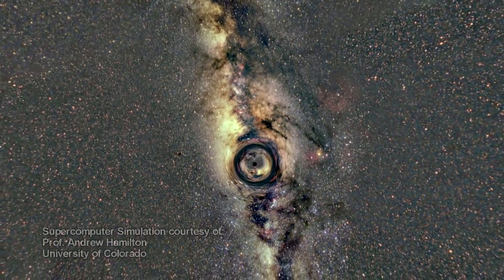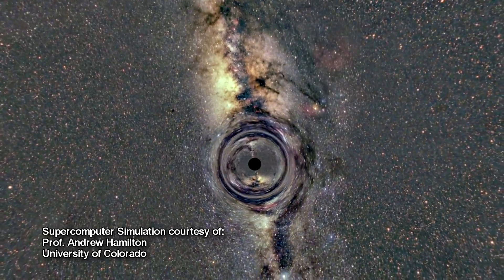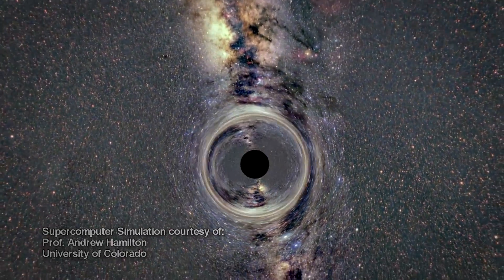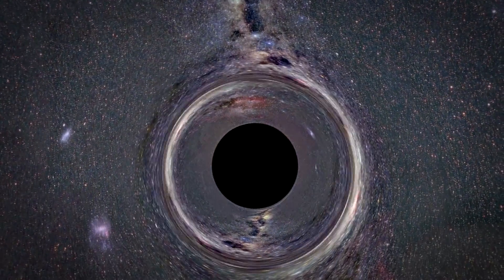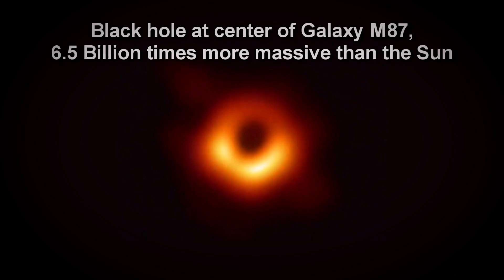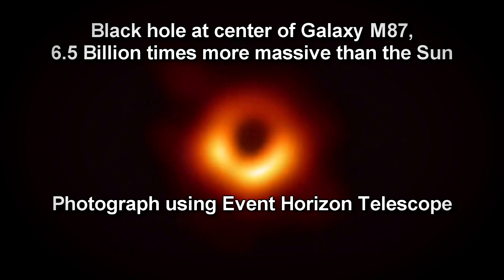They're one of the most mysterious things in the universe. Theorized from Einstein's theory of relativity, they were thought to not even exist for much of the 20th century. Today, not only do we know that they exist, but in 2019 we were able to see the first actual photograph of a black hole via a collection of synchronized networks of telescopes called the Event Horizon Telescope.